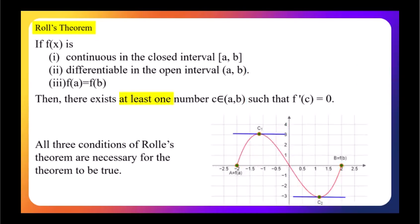In Rolle's theorem, the point c can be multiple — meaning there exists at least one point c where the derivative is zero, the slope of the tangent is zero, or the tangent line is parallel to the x-axis. Such a point c can be two or more in number.